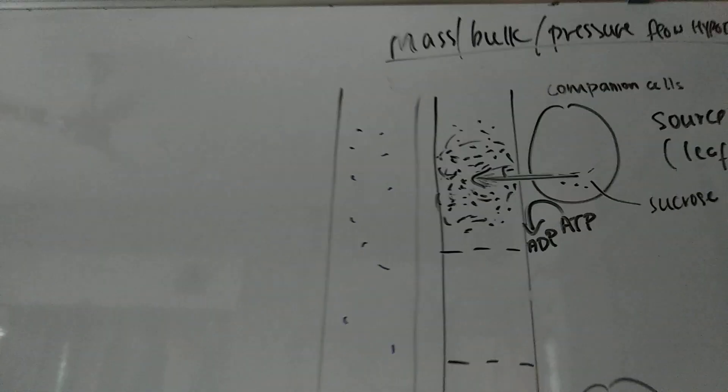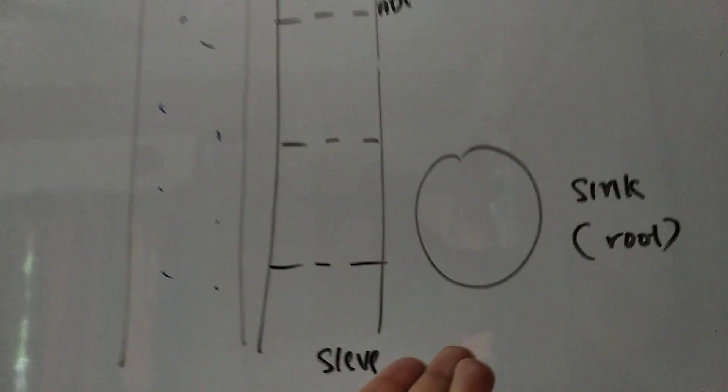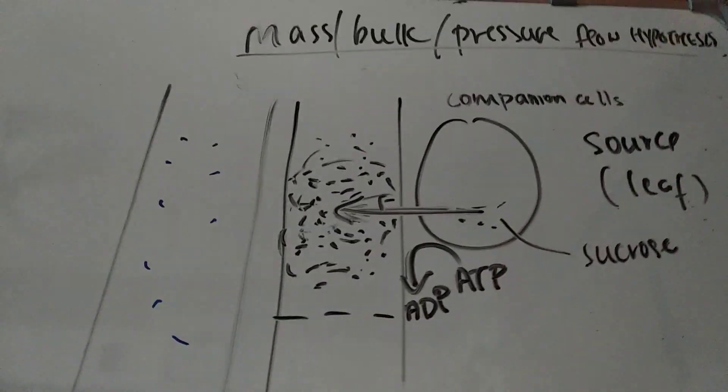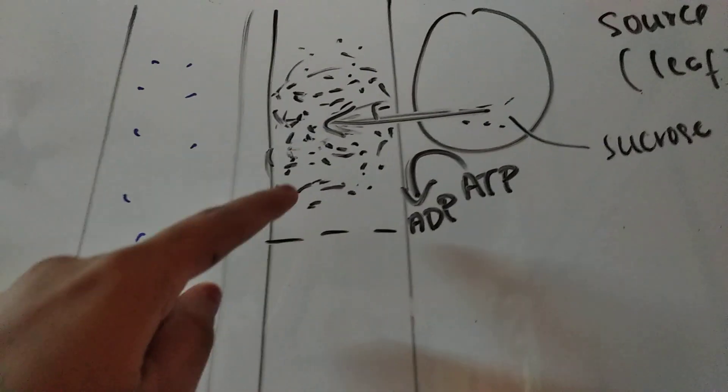But how does the phloem know where the sink is? Because it could be a root, or it could be some part above the leaf, like a flower bud or something. So how does the phloem know in which direction it should transport the solute? I'll tell you that in a minute.